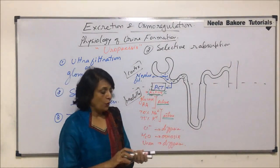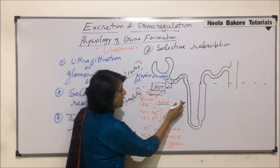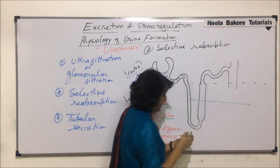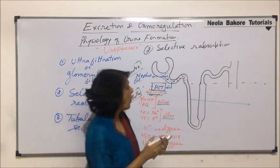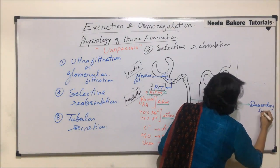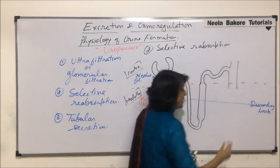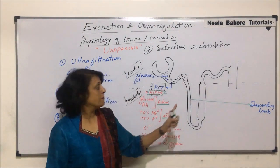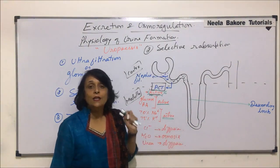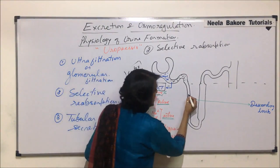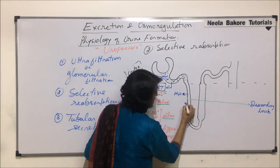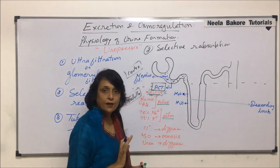This filtrate then comes into the descending limb of the loop. The membrane of the descending limb is permeable only to water, so here only water comes out and gets absorbed.